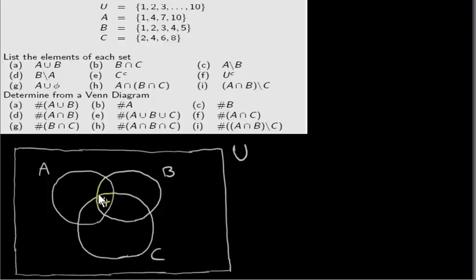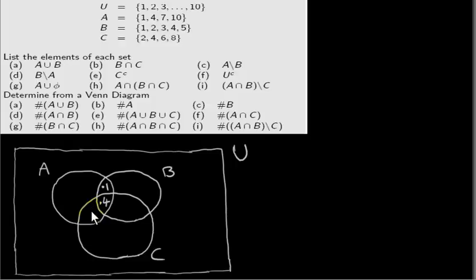Then we work our way out. We could look at the intersection of just A and B alone. What elements are in just A and B? Well, it's the element one. What about the intersection of A and C? Well, there's actually nothing in here, so I could just leave this empty — or you could hatch it in, but I'll just leave it empty.